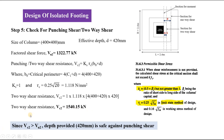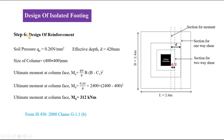Since the two-way shear resistance Vc2 (1540.15 kN) is greater than the factored shear force VU2 (1322.77 kN), the depth provided is safe against punching shear. If it were not safe, we would need to increase the depth of the footing.